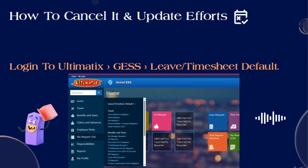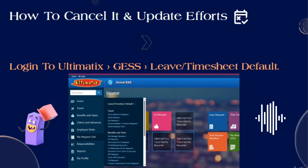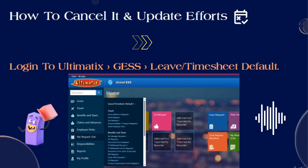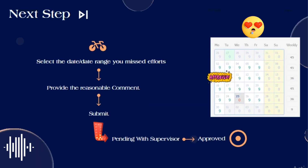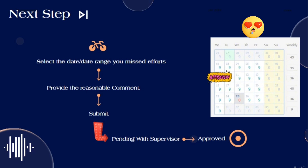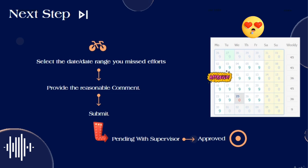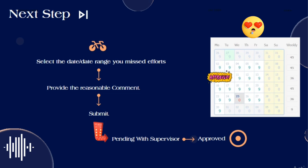Let's see the complete process on how to raise an approval request to your supervisor. First, log in to Ultimatix, then go to GSS, and in the top right you will see 'Leave or Timesheet Default' — click on that. The UI will appear where you have to select the date range for which you want to raise a cancel request. Select the date range for however many days you missed filling the timesheet. After that, below it, provide a reasonable comment explaining why you missed filling the timesheet — for example, that you forgot but had worked on that day. Then submit and ping your supervisor over Teams or mail saying you have submitted the request.